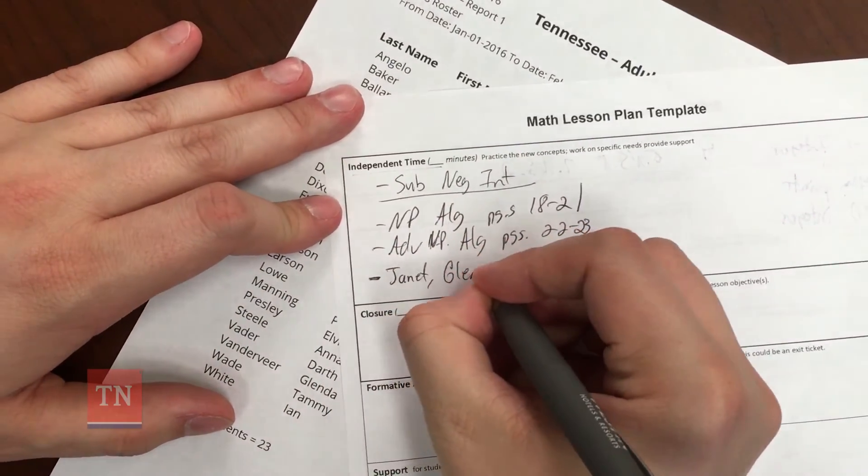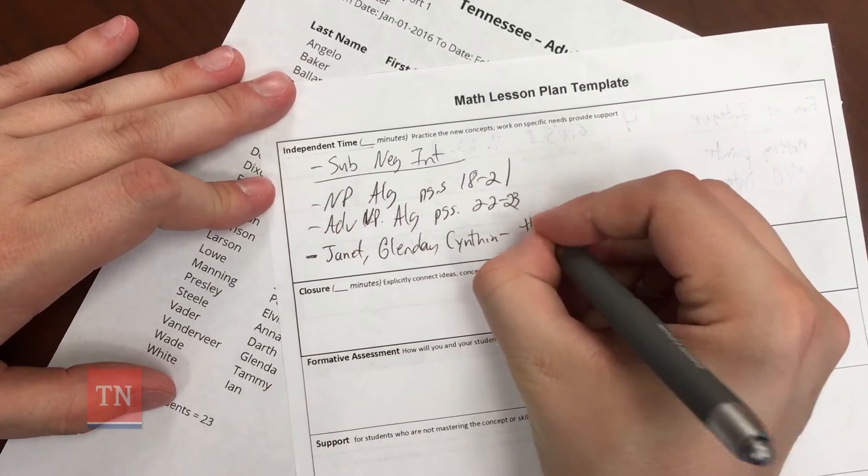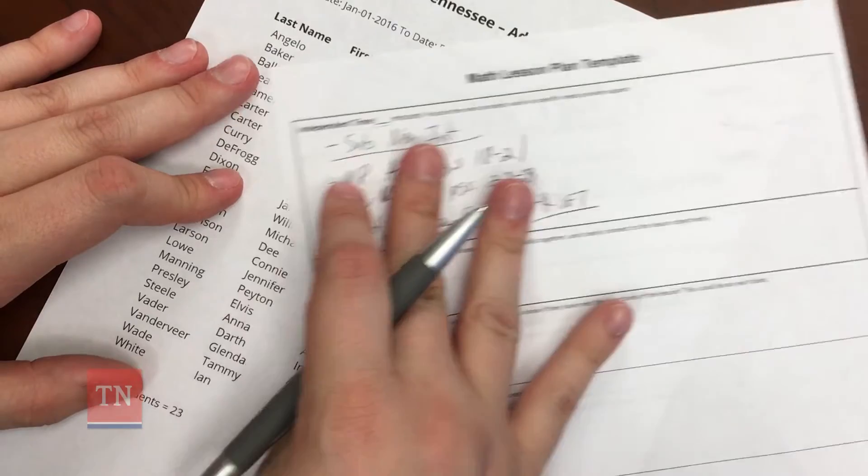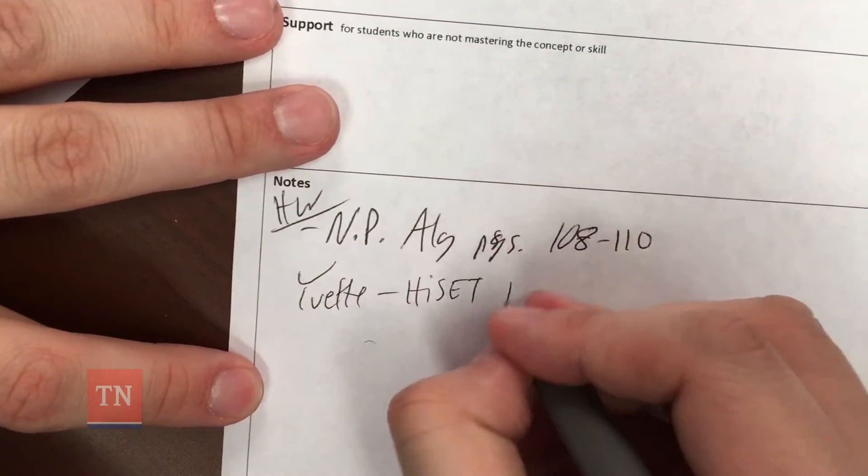In this class, Janet, Glenda and Cynthia are my math wizards. They aren't too far away from being ready to take the HiSET. I need to give them some HiSET specific practice during the independent work time. Okay, Yvette, another one of my star students, recently took the HiSET official practice test and she scored well enough to go take the actual HiSET. I need to talk to her, either during independent time or at the end of the class, to tell her how well she did and help her get started on signing up for the test. I'll make a note of that so I don't forget.